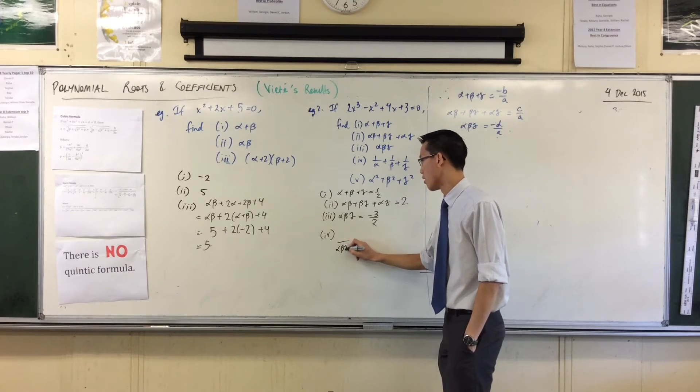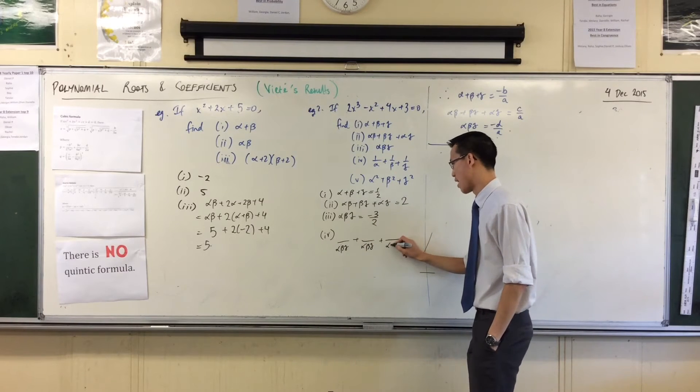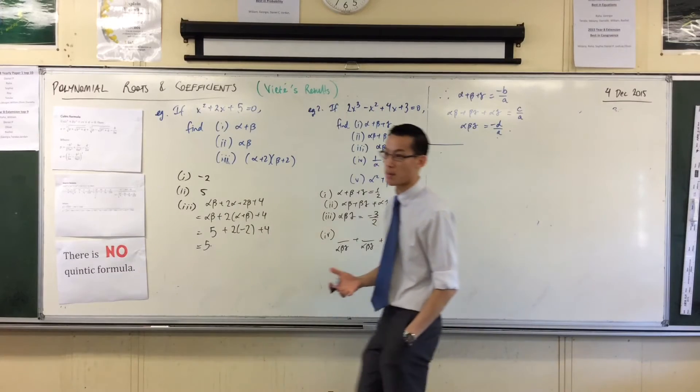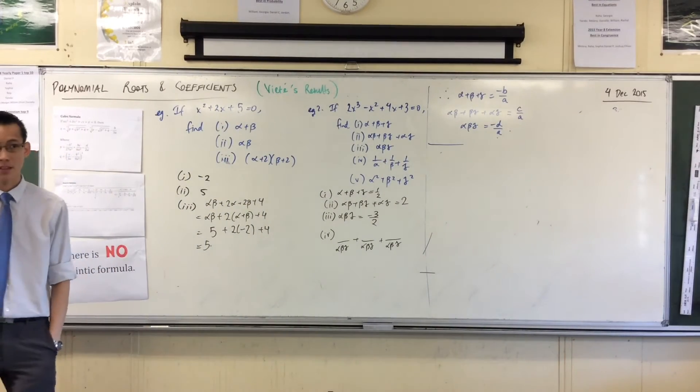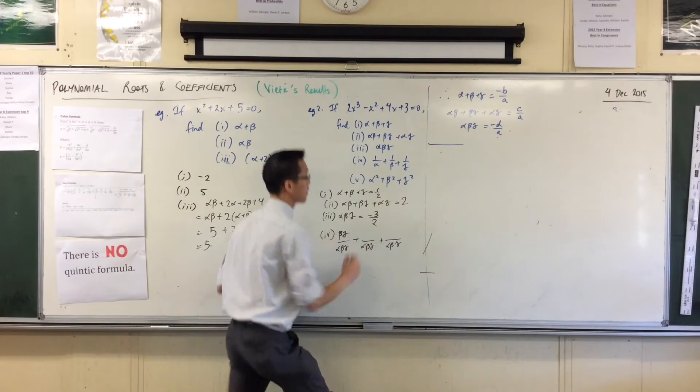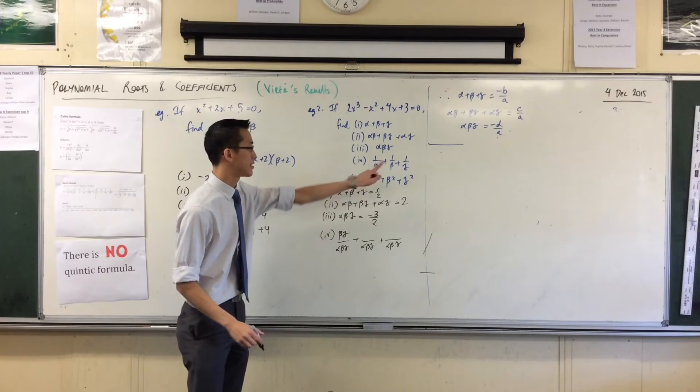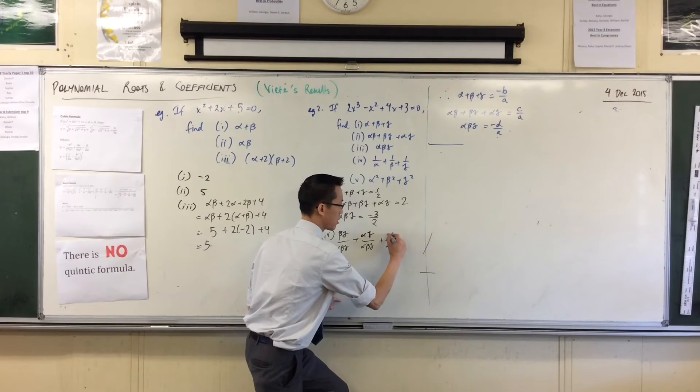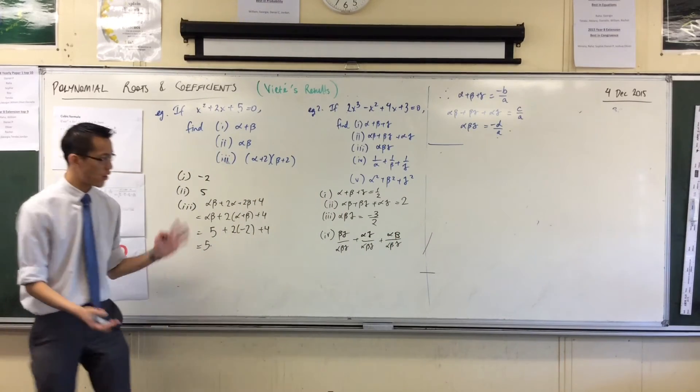For example, the common denominator here being that I have an alpha and a beta and a gamma, the common denominator clearly has to be alpha beta gamma. It's going to be alpha beta on alpha beta gamma, plus on alpha beta gamma. What do I have to multiply each of those fractions by to get a denominator of alpha beta gamma? Look at the first one. Beta gamma. I've got to multiply that guy by beta gamma. In the same way, I'm going to have to multiply this one by alpha gamma, and the last one by alpha beta.